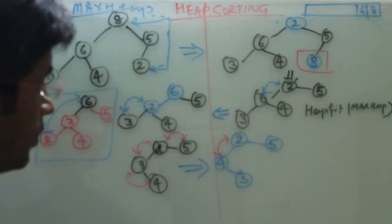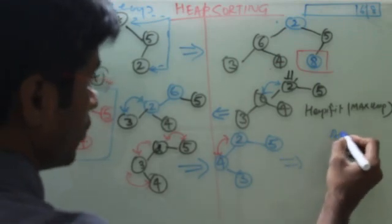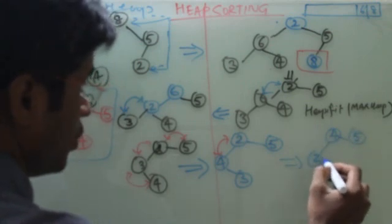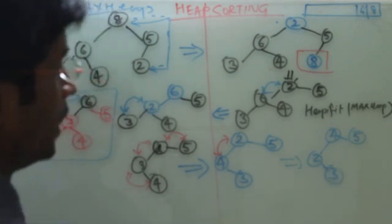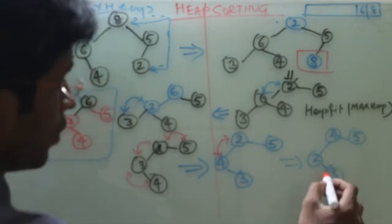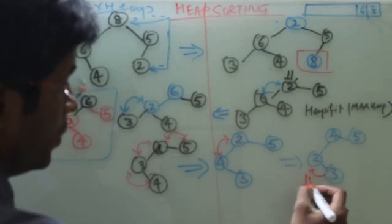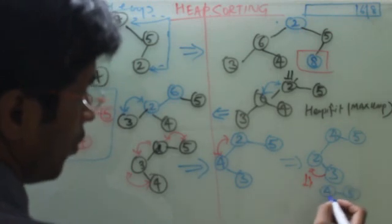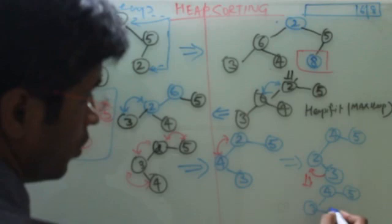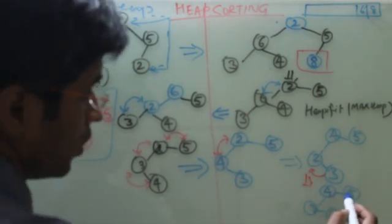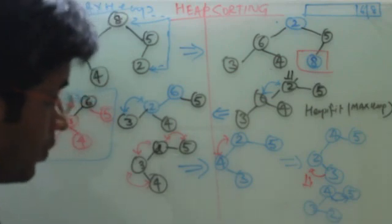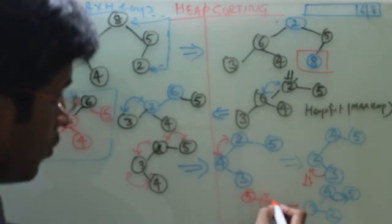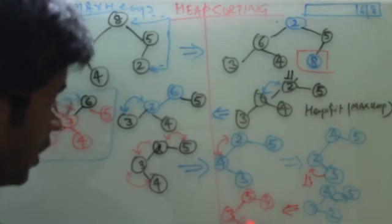Now this needs to be swapped again. So the new tree will become 5, 4, 3, and 2. So now the final one will be here: 5, 4, 3, and 2.